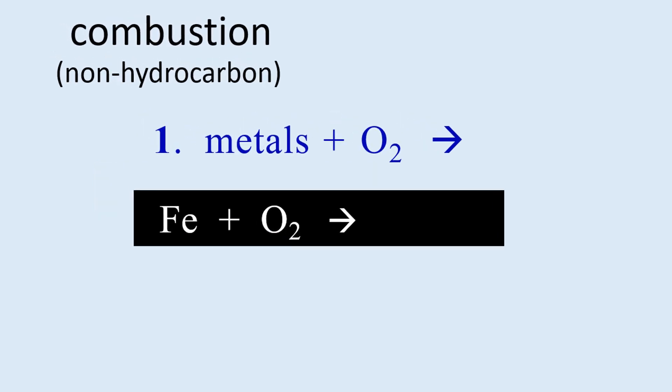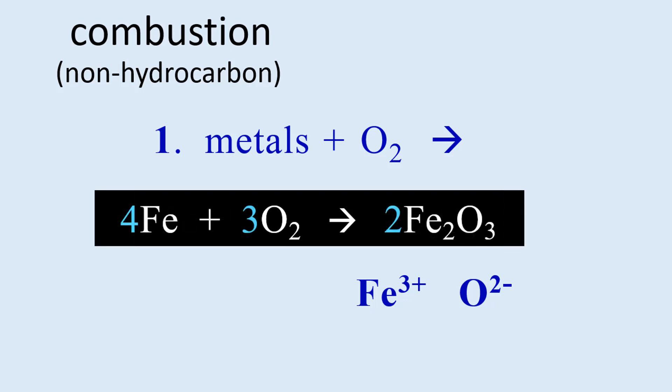Many metals, however, can have more than one possible charge, such as most transition metals. For iron, the most stable charge is 3+, and so the subscripts required to balance the combustion of iron and oxygen are two and three, Fe2O3, and then the equation can be balanced.